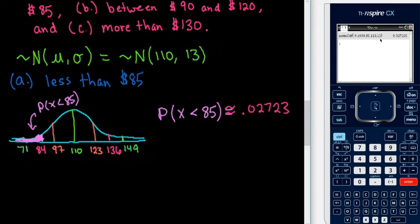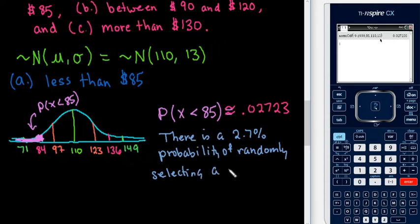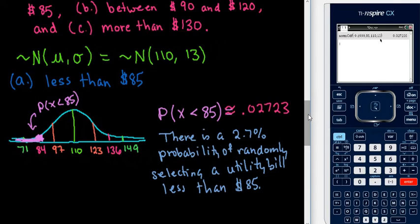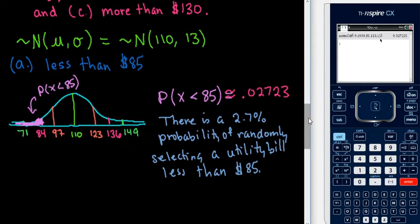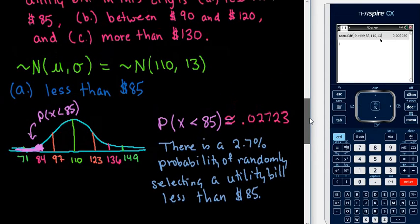We can say that there is approximately a 2.7% probability of randomly selecting a utility bill that is less than $85. This is pretty uncommon — anything less than 5% tends to be uncommon. It's not very probable to get this result, even though it could happen.